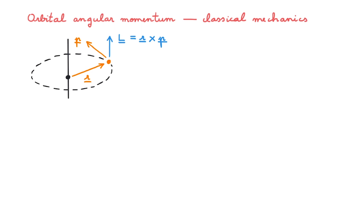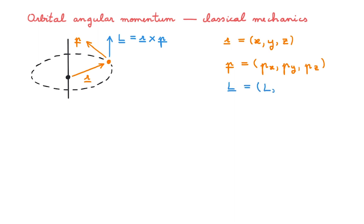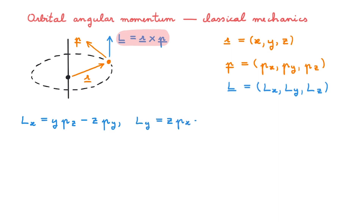Keep in mind that this is a general definition, so this diagram here is just a simple example. Spelling out the position vector in Cartesian coordinates x, y, z, and the momentum vector in terms of px, py, and pz, we then label the angular momentum components lx, ly, and lz, and by carrying out this cross product we find that lx equals this, ly equals this, and lz equals this.